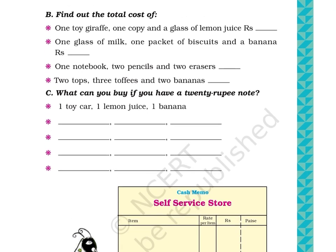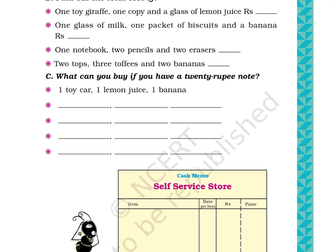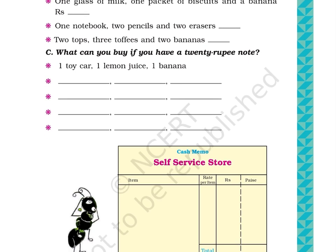Question C: What can you buy if you have a 20 rupee note? Part A – Toy car, one lemon juice, one banana. This part is solved as an example. Parts B, C, D, and E have blank spaces for students to fill in their own answers.